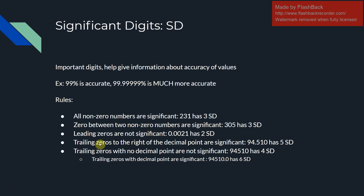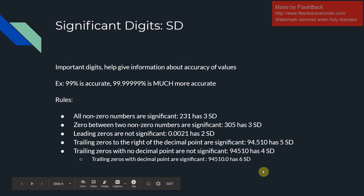When looking at trailing zeros, trailing zeros to the right of the decimal point are significant — they will always be significant. For example, 94.510 has five significant digits; every digit is significant. But trailing zeros without a decimal point are not significant, so 94,510 has only four significant digits — the trailing zero is not significant. However, if you have 94,510 with a decimal point, every single digit is significant, giving you six significant digits.